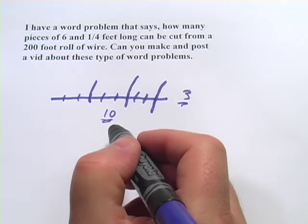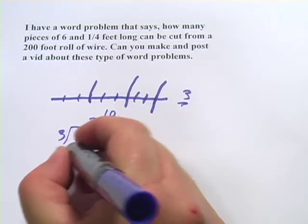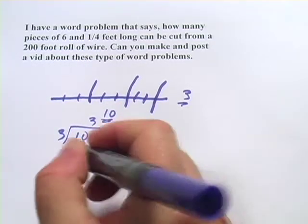So if I had done this problem, I could have done this problem as ten divided by three. What you get when you do that is three with one left over, or three and one third.